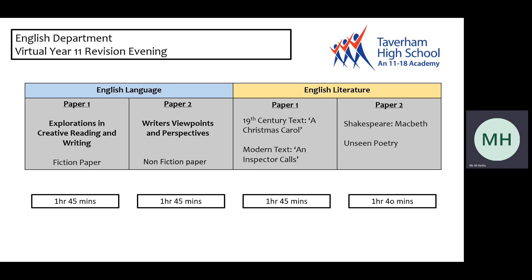For English Literature, paper one covers the 19th century text A Christmas Carol by Charles Dickens and the modern text An Inspector Calls by J.B. Priestley. Paper two is the mandatory paper, which comprises Shakespeare — we have all been looking at Macbeth — and the Unseen Poetry component.